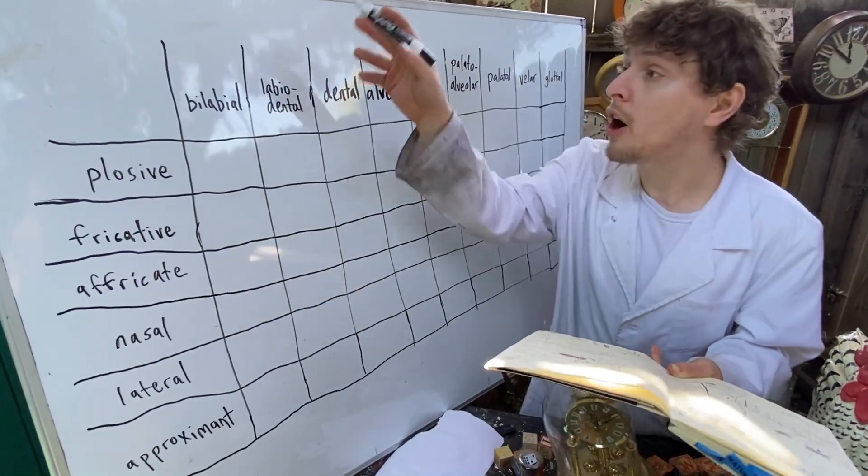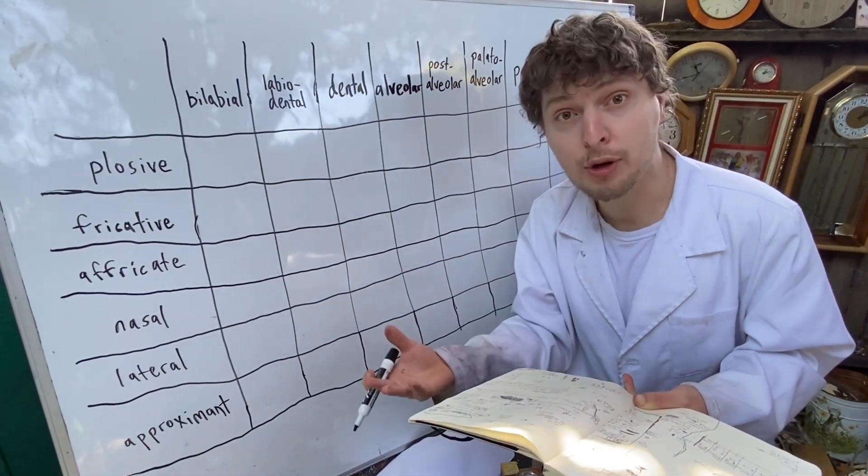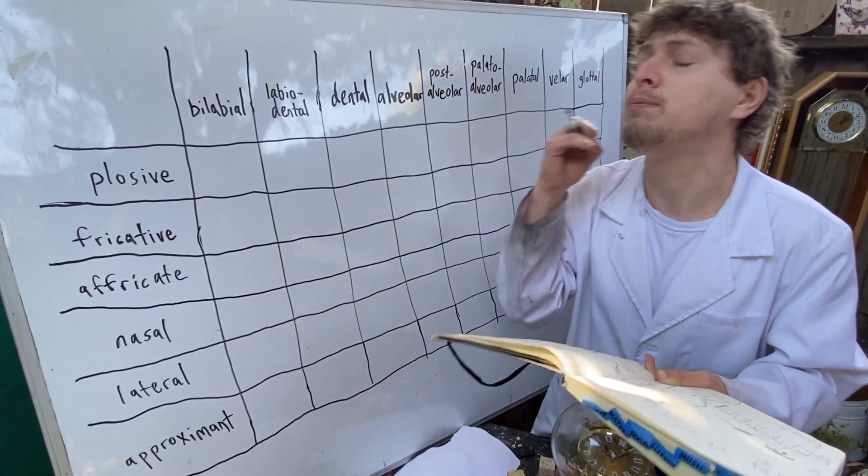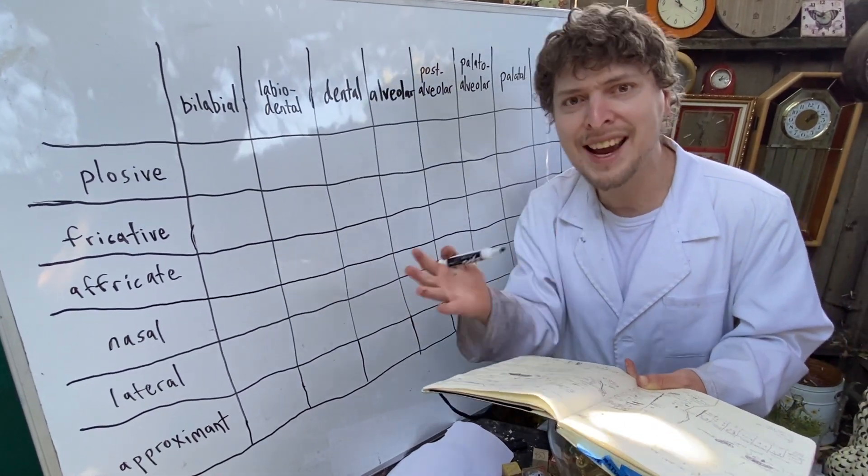On my chart, the columns represent the names for ways you can shape your mouth when you're making a consonant, and the rows represent the way you blow out the air. Let's see where some sounds we know lay here.